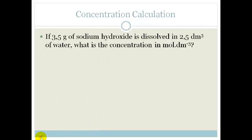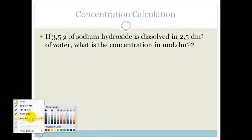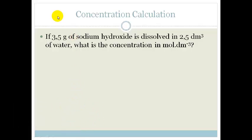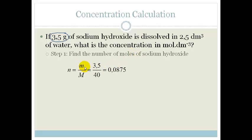So let's look at an example. In this example we're going to be trying to find the concentration. If we take 3.5 grams of sodium hydroxide and it's dissolved in 2.5 decimeters cubed of water. So first of all you have to realize that we need to find the number of moles of sodium hydroxide because they've given us the mass. So we know that the number of moles is mass over molar mass.